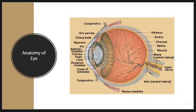The pupil is the black dot in the center of the eye that acts as a gateway for light. Behind the iris and the pupil there is a lens. Choroid is a layer containing blood vessels, as you can observe. It is located at the back of the eye, between the retina — the inner light-sensitive area — and the sclera, the outer white wall.